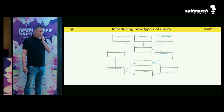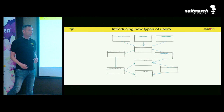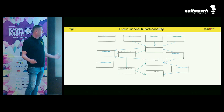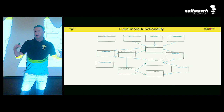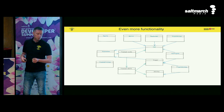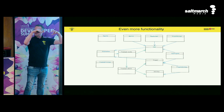Then it becomes multi-tenant, so multiple companies need to work on it. We get organizations added. Then of course we need more reports and timesheets. This is the normal evolution of applications that we all know — this is how we normally design our systems, with new features being stacked on top of the others.